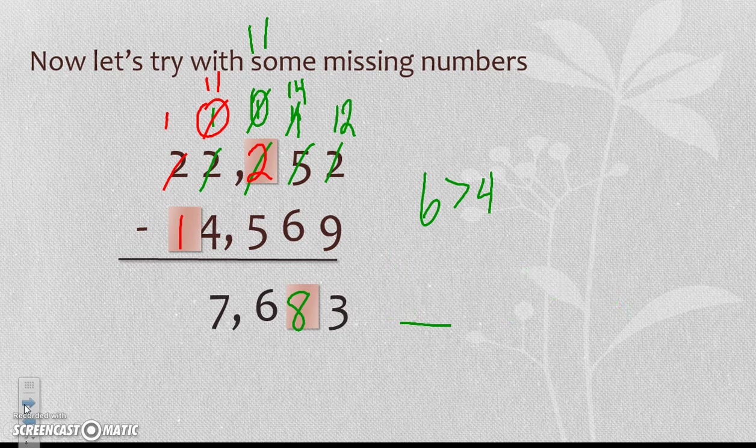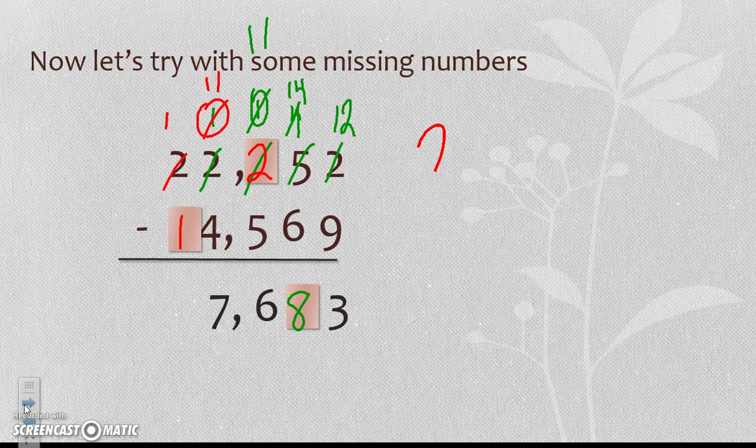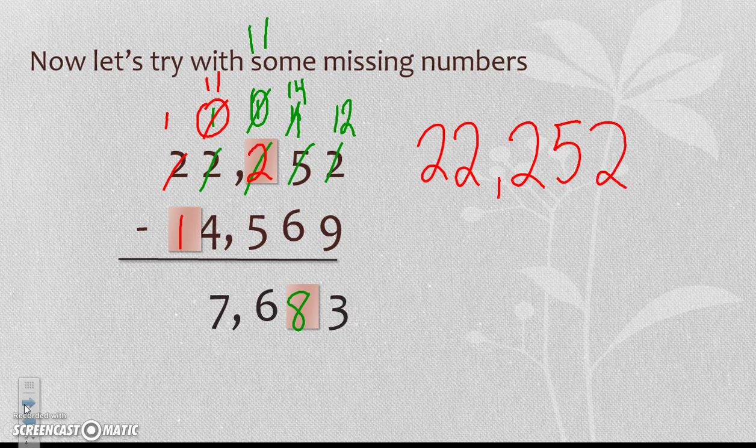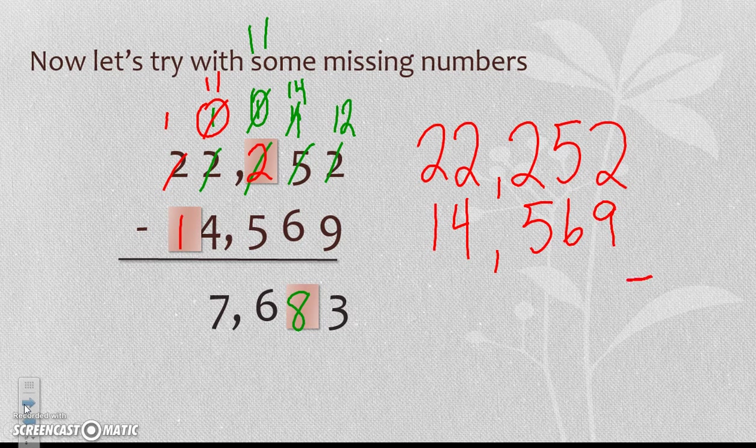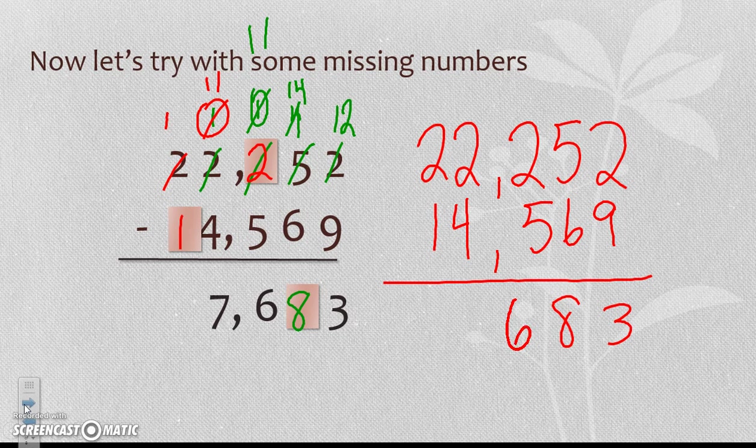Let's rewrite our problem so that we can check. So I have 22,252 minus 14,569, and my final answer would have been 7,683.